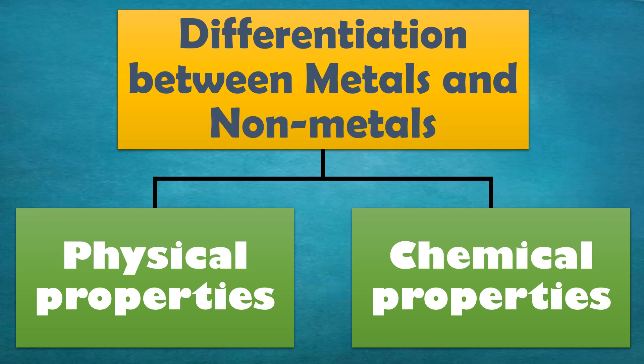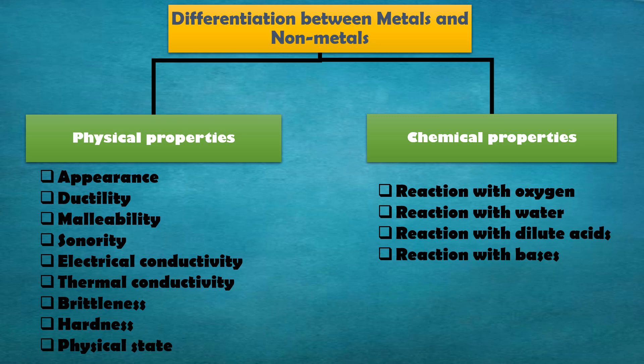In this chapter, we will differentiate between metals and nonmetals on the basis of their physical and chemical properties. Physical properties of elements include appearance, ductility, malleability, sonority, electrical conductivity, thermal conductivity, brittleness, hardness, and physical state. Chemical properties include reaction with oxygen, reaction with water, reaction with dilute acids, and reaction of elements with bases.